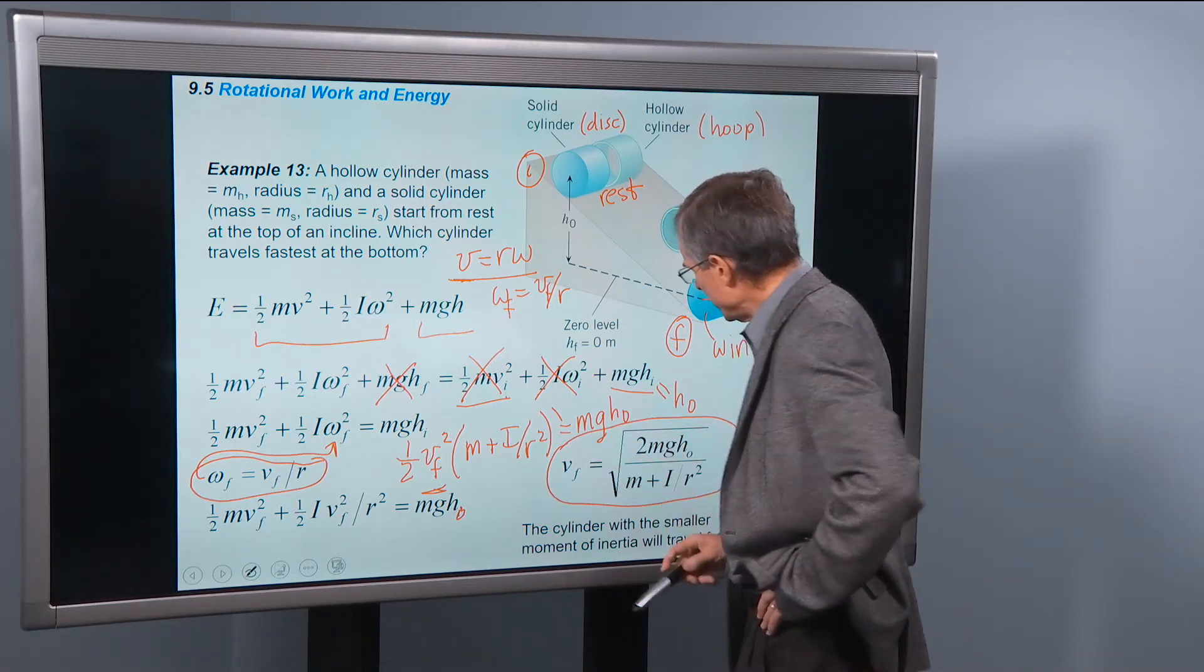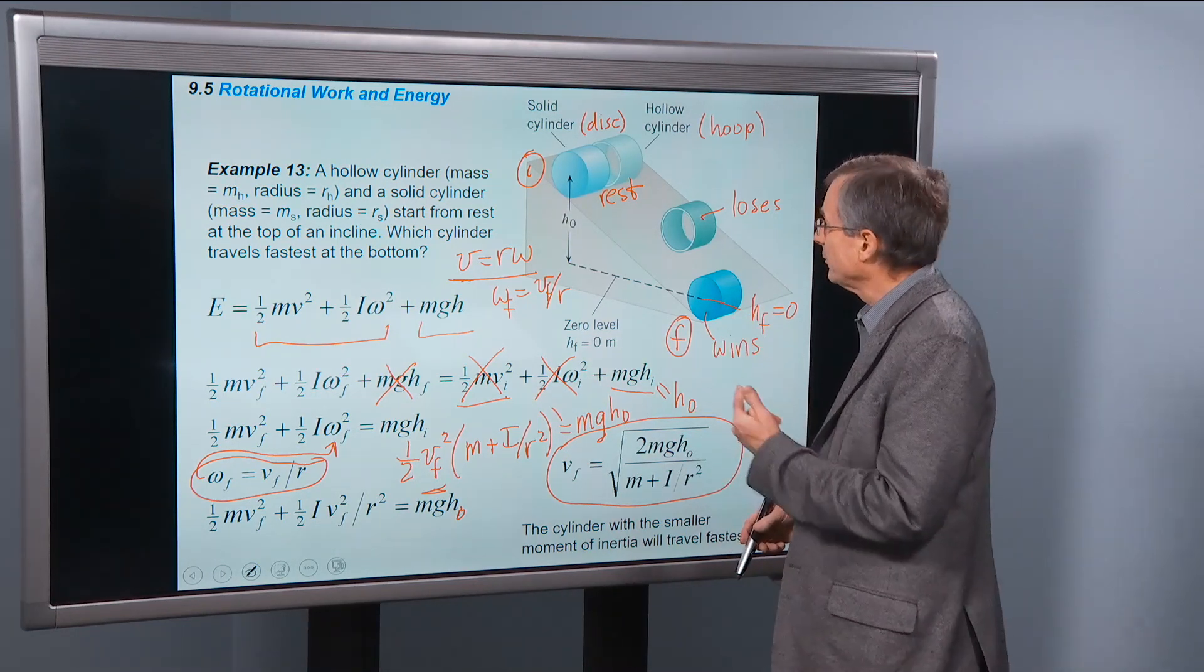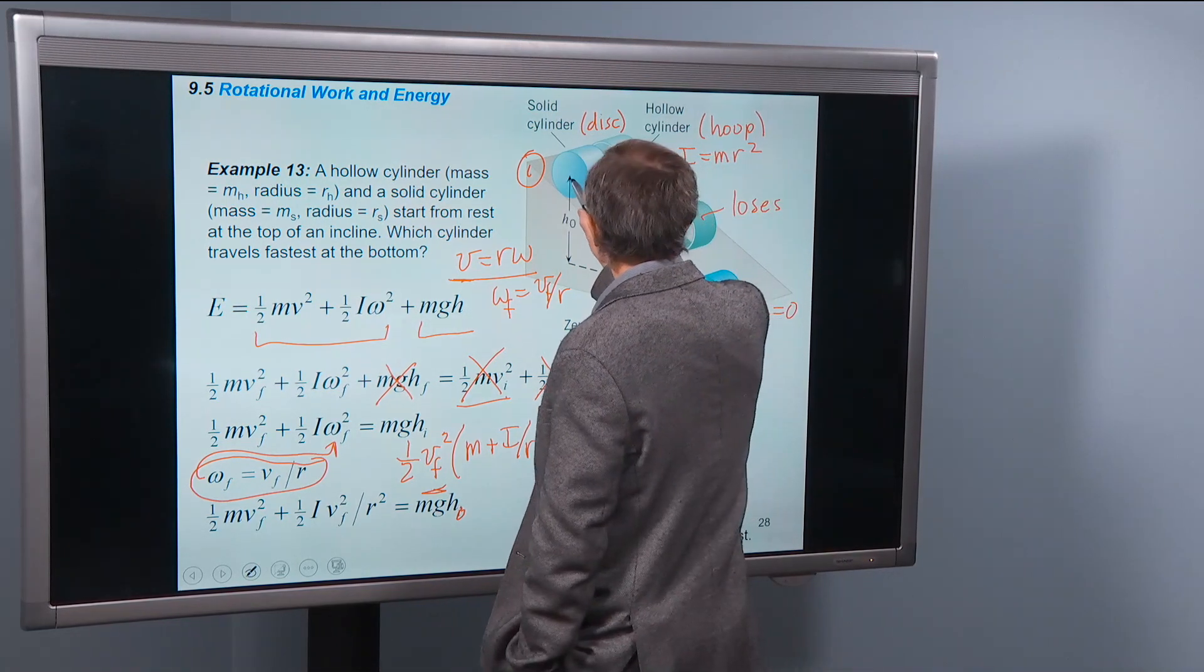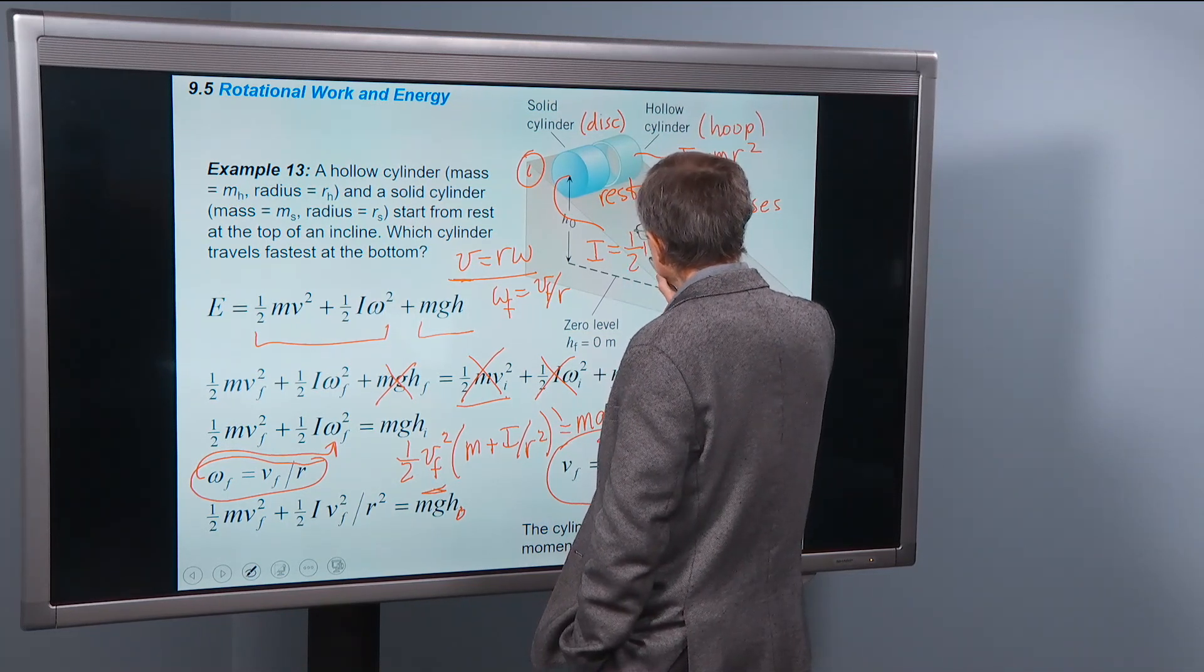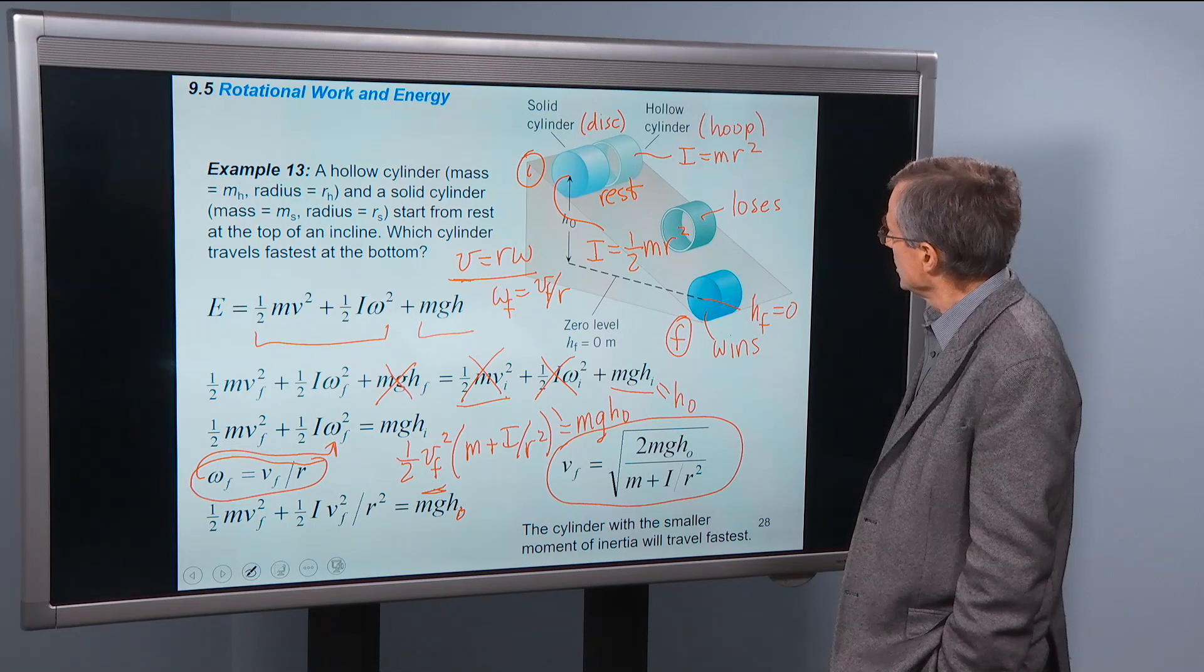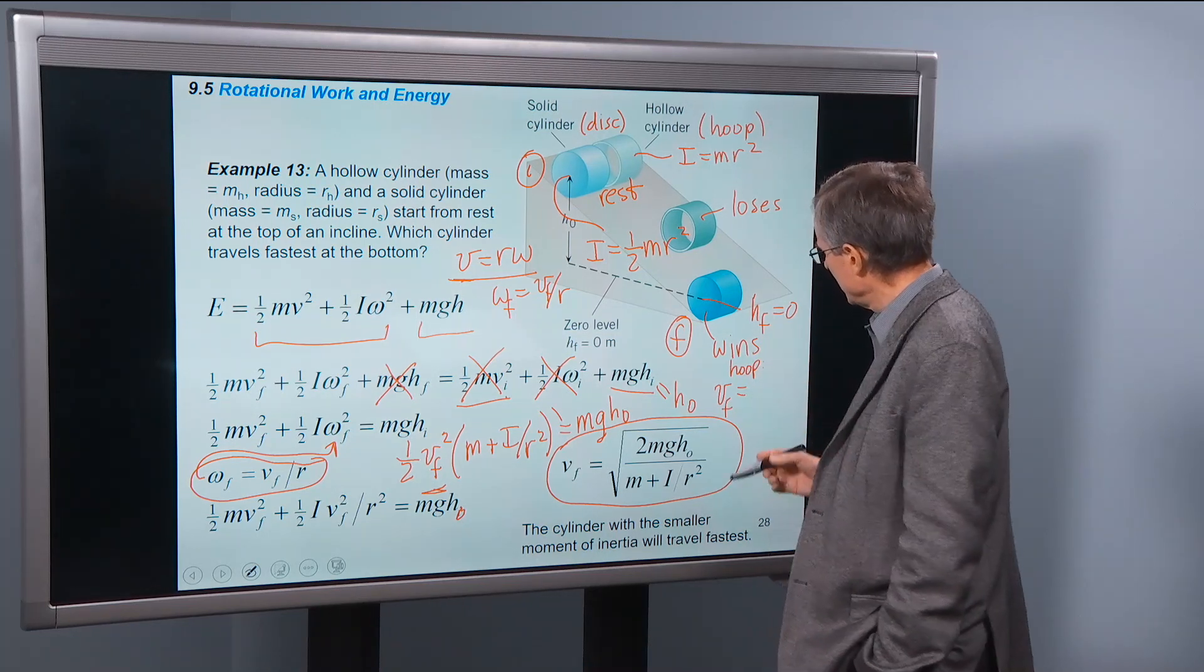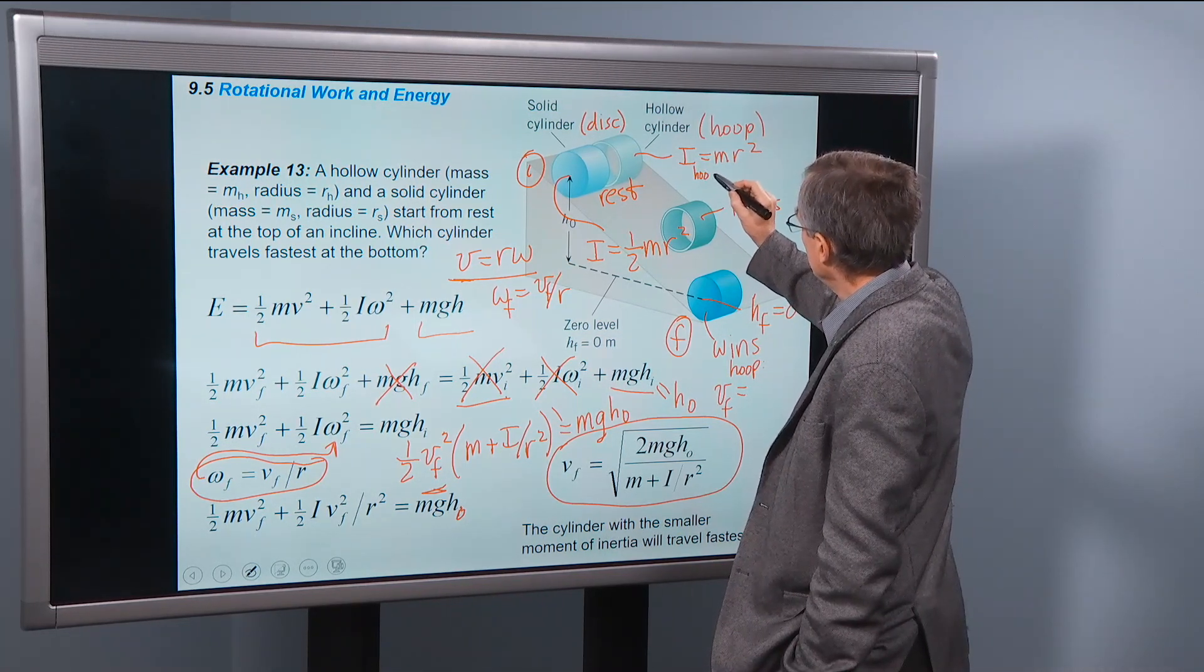Okay, what does this equation tell us? First of all, to figure out what it's going to tell us about this race, we have to remind ourselves what the moment of inertia of these two objects is. This one's mr² for the hoop. And this one, for the solid cylinder, is 1/2 mr². So the final, for the hoop, what's it going to be? Here's the moment of inertia for the hoop. It's mr².